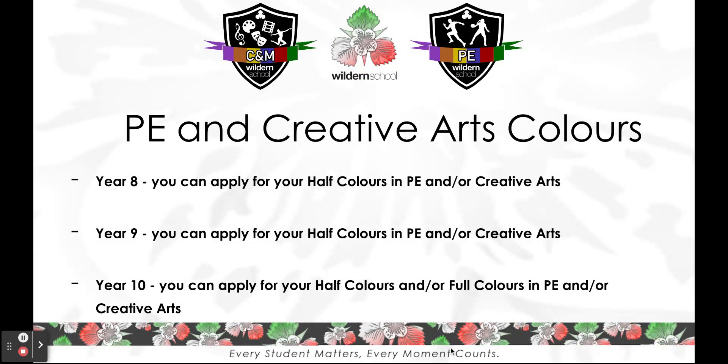Now, who can apply for what? It's very much about a commitment to PE and/or the Creative Arts over a period of time. In Year 8 you can apply for your half colours in PE and/or Creative Arts, as it's about your commitment over two years. In Year 9, if you haven't already applied for your half colours, you can still get those. In Year 10 you can apply for your half colours if you haven't already, but you are also eligible to apply for your full colours — Year 10 is the only year group that can apply for full colours, as it's about a commitment over four years.